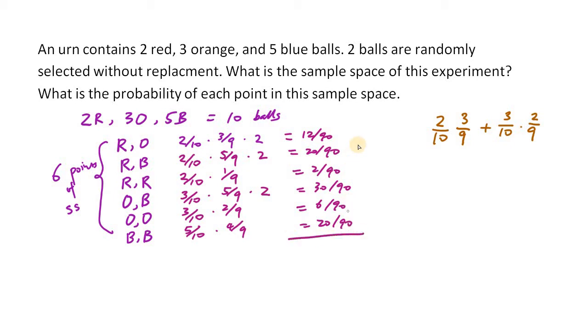And then to confirm, we can sum up all these probabilities. So if you look at 12 plus 2 plus 6, that's 20, plus 20 that's 40, plus 30 that's 70, plus 20 that's 90. So they do add up to 1, which should always be the case for the sum of all the probability of each point in the sample space. So there you go, that's the answer.